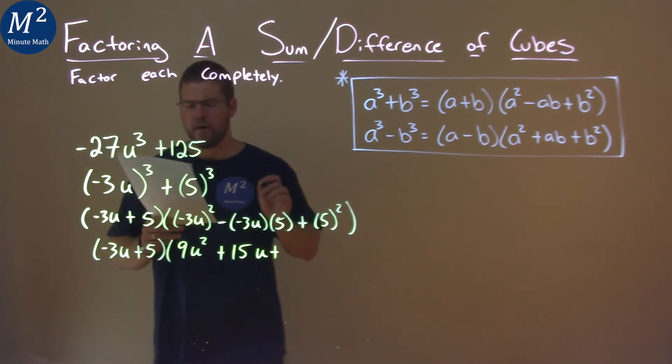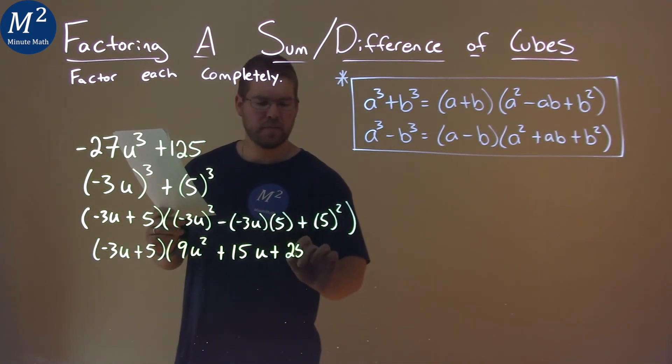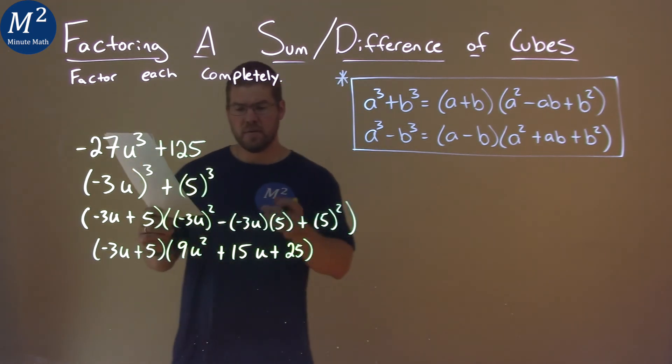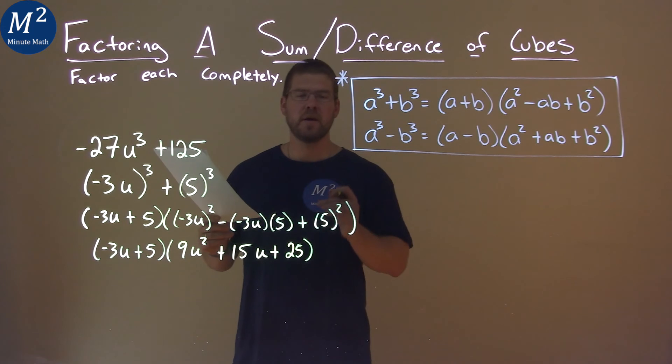So we add, 5 squared is 25, and so our final answer is negative 3u plus 5 times 9u squared plus 15u plus 25.